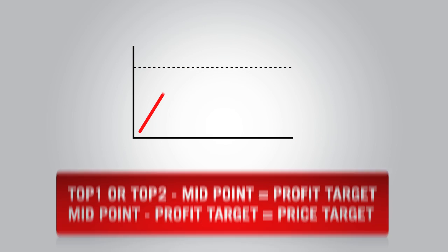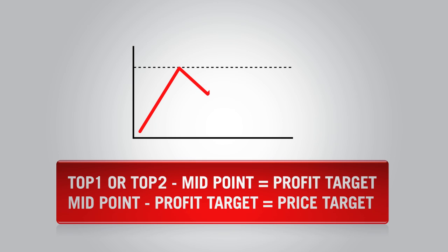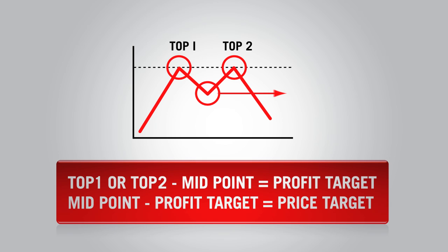The usual method of entering a trade using a double top is to sell when the price drops below the dipping point in between the two peaks of the double top — this is represented by the circle on the chart. The profit target is calculated by subtracting the price of one of the tops from the dipping point in between the two tops, and subtracting that number from the value of the dipping point.